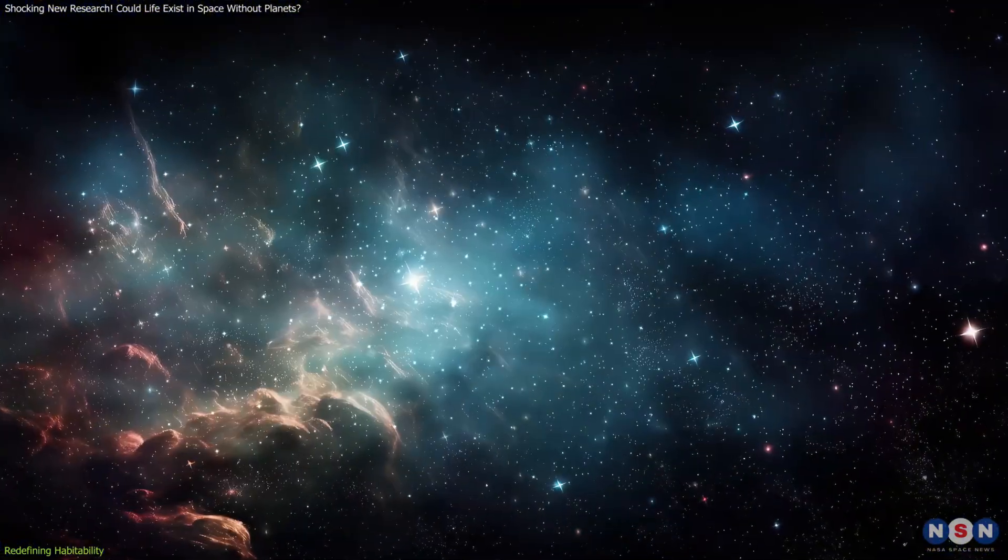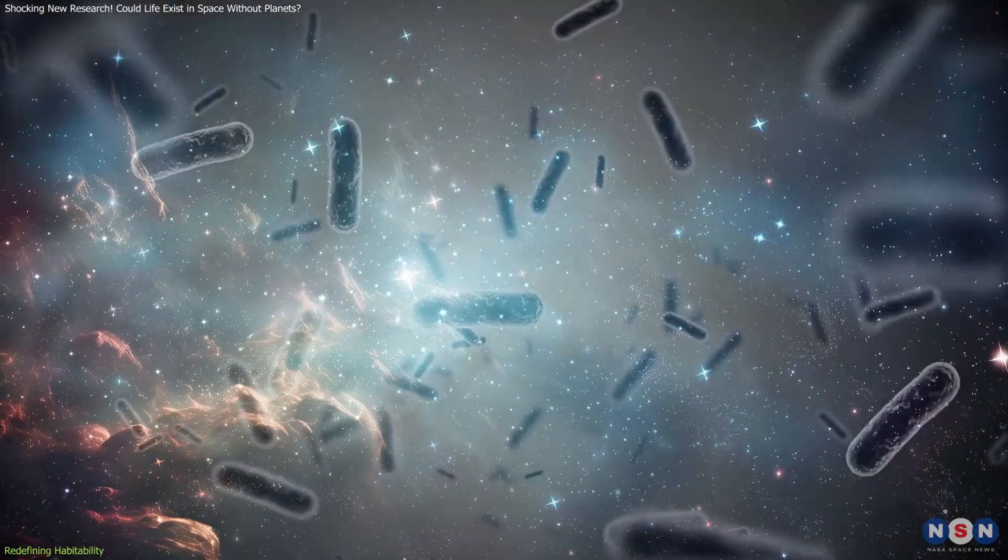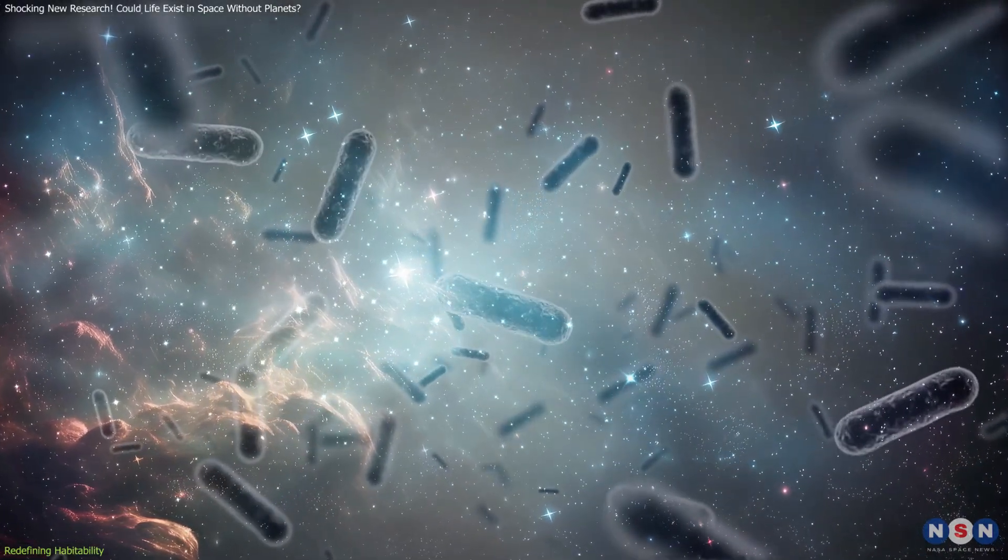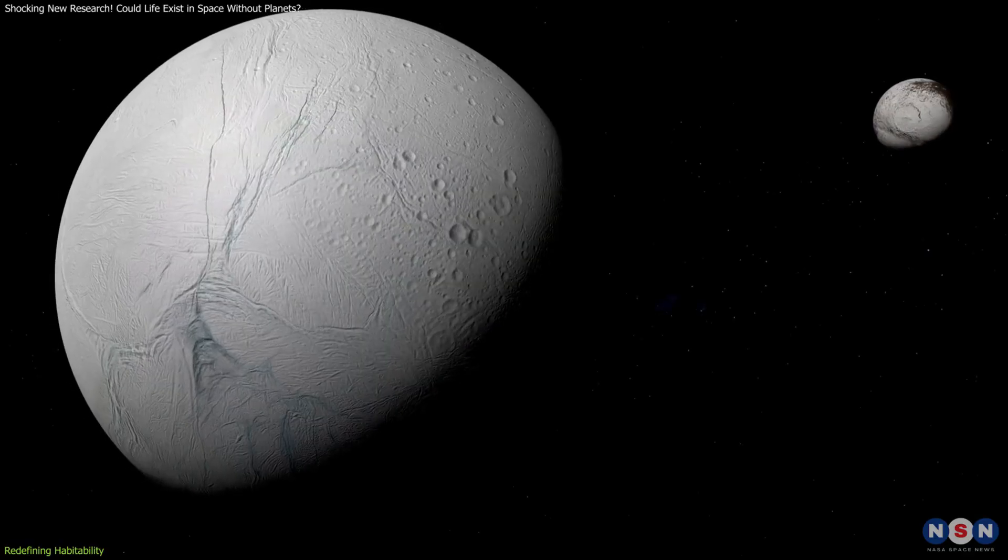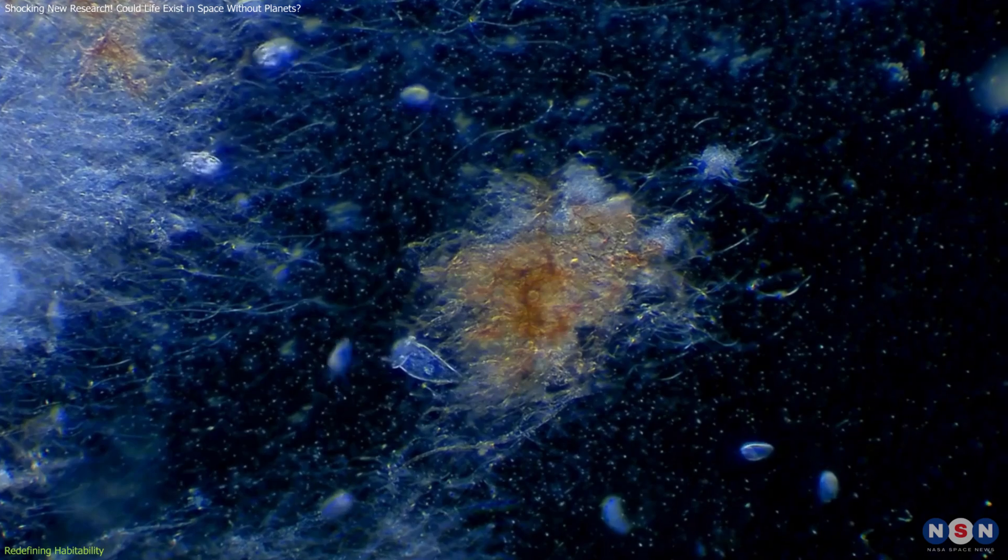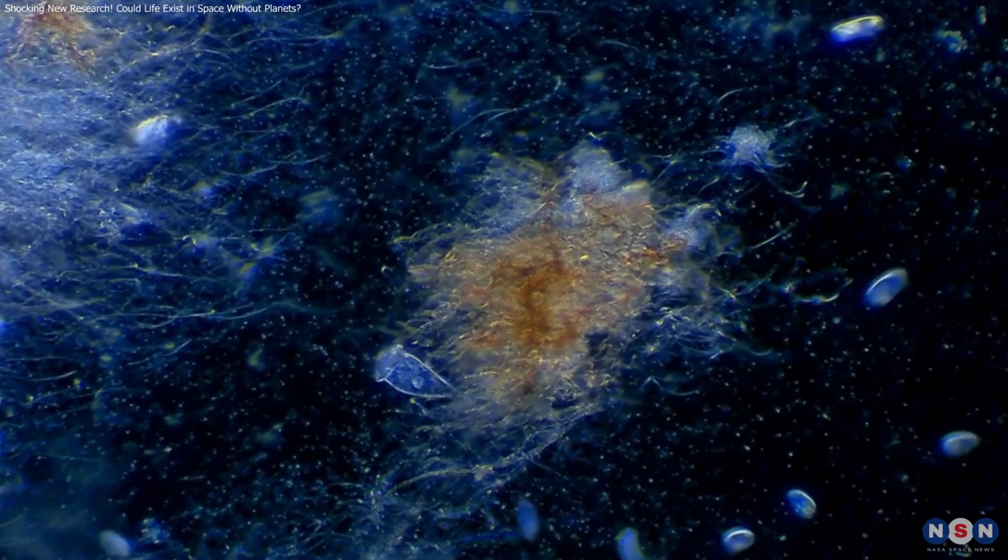This redefinition shifts habitability from being a location's characteristic to a property of life forms themselves. Such a paradigm challenges astrobiology to rethink the criteria for searching for life in unconventional locations, like icy moons such as Europa or Enceladus, where microbial life might exist within self-created habitable zones.